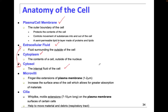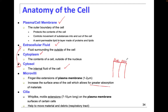Microvilli and cilia: microvilli increase the surface area of the cell and allow for greater absorption. This will come in handy when we get into digestion. If this is an intestinal cell, they have these microvilli on the top, and inside of the cell you may have arteries.